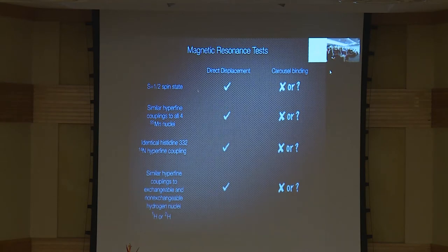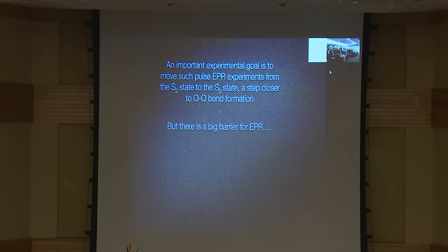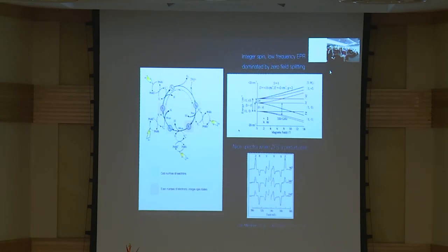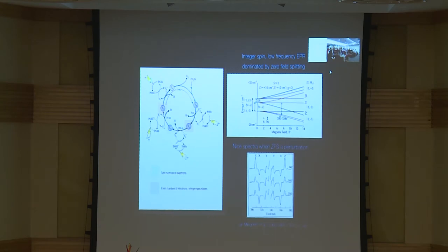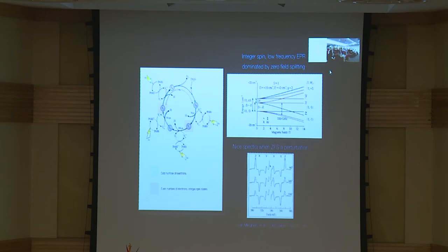We really need to keep going further and get to the S3 state. The problem is that EPR works better with an odd number of electrons, and just like S1, S3 has an even number of electrons — a non-Kramers integer spin system. At low microwave fields, EPR frequencies are dominated by zero-field splittings. But if you go to high enough frequency you can get really beautiful data — for example, chlorophyll triplets show exactly what you want to see: when the zero-field splittings are a perturbation on the Zeeman fields.